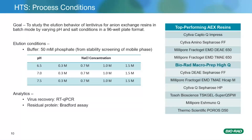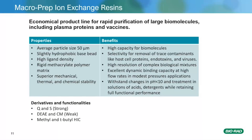For the benefit of time, I will be focusing on the results from the MacroPrep HiQ resin for the rest of the presentation. I would like to spend some time going over a few key points about MacroPrep HiQ resin. This is an economical product line from Bio-Rad known for rapid purification of large biomolecules. It has shown several benefits including high capacity, selectivity in removing trace contaminants, high resolution, and excellent dynamic binding capacity. Moreover, it can withstand pH changes up to 10 and retain full functional performance in the presence of sanitization treatments. This is due to its rigid methacrylate matrix which provides superior mechanical, thermal, and chemical stability. MacroPrep HiQ is a slightly hydrophobic base bead with high ligand density, available with an average particle size of 50 microns.